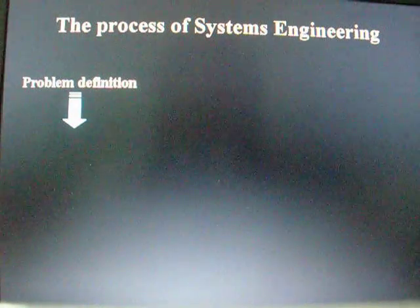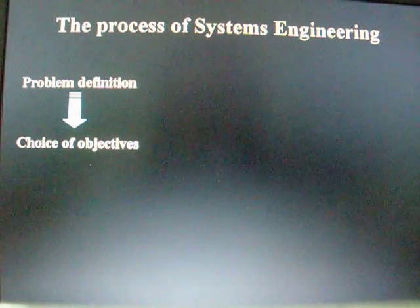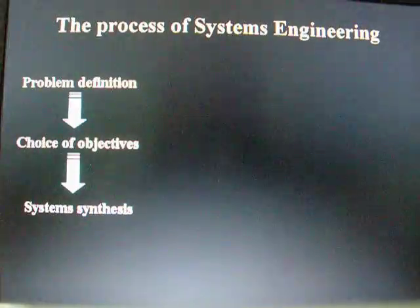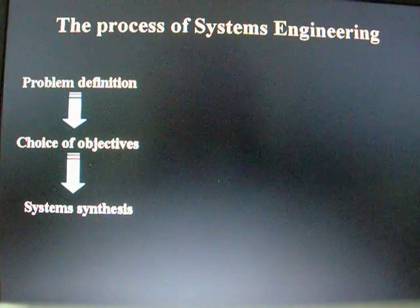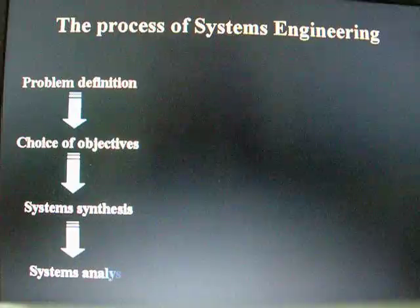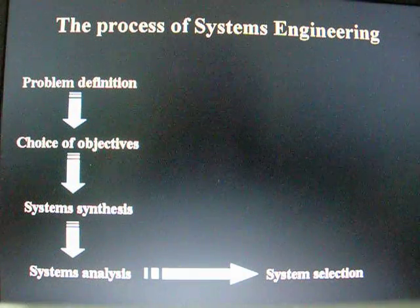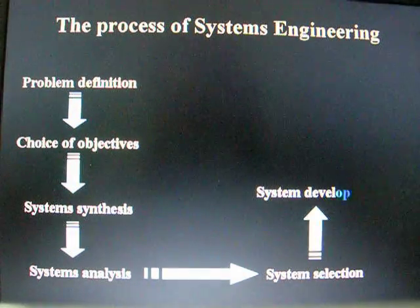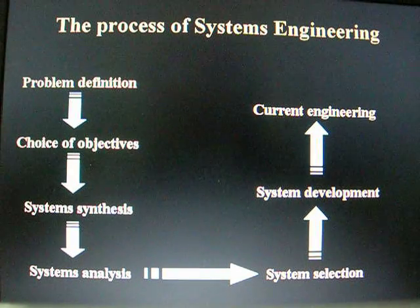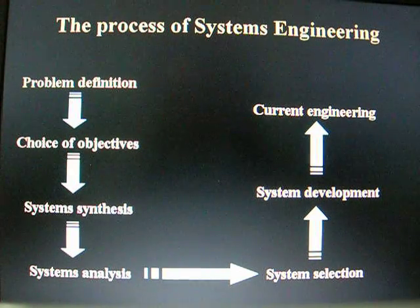Now we proceed into the process of system engineering. First, we define the problem. And then, choice of objective, followed by system synthesis — that is a combination of an idea — system analysis, system selection, followed by system development, and the last one is current engineering, where we start to implement it.